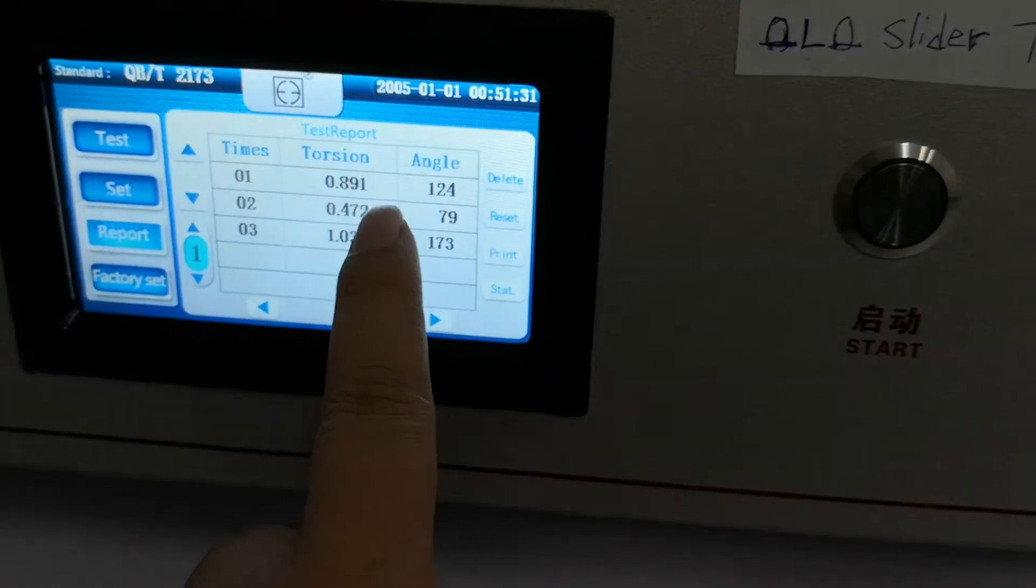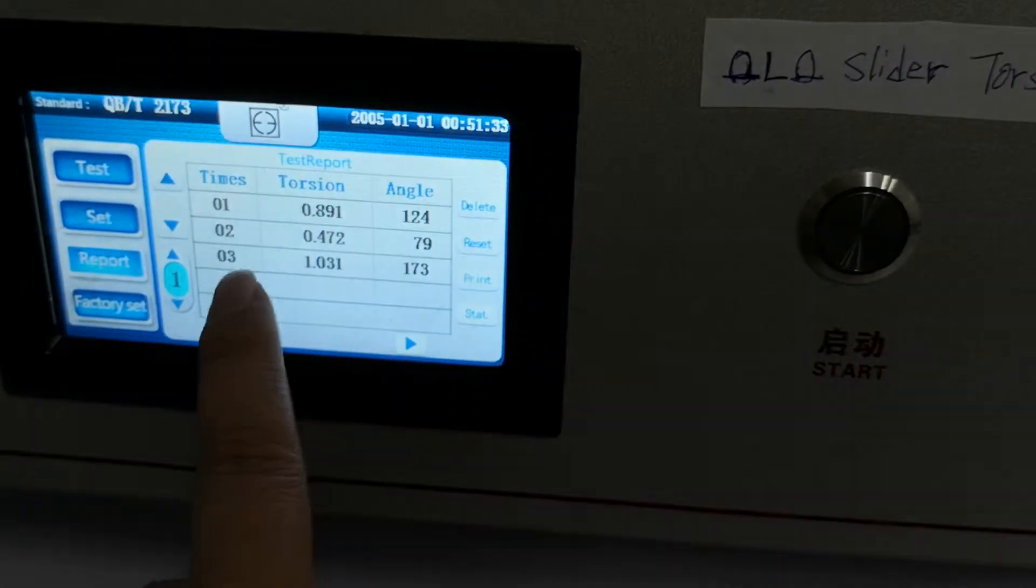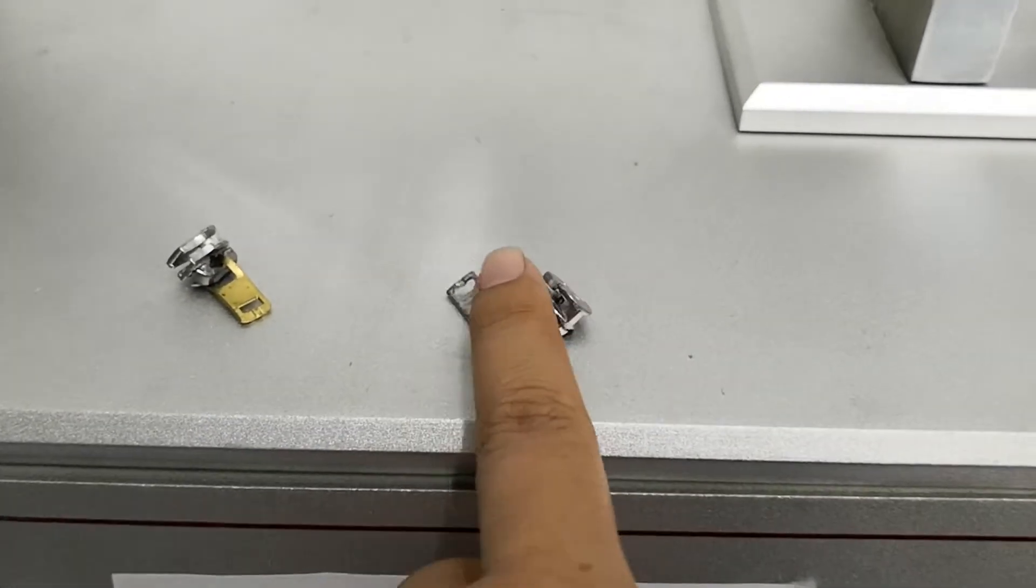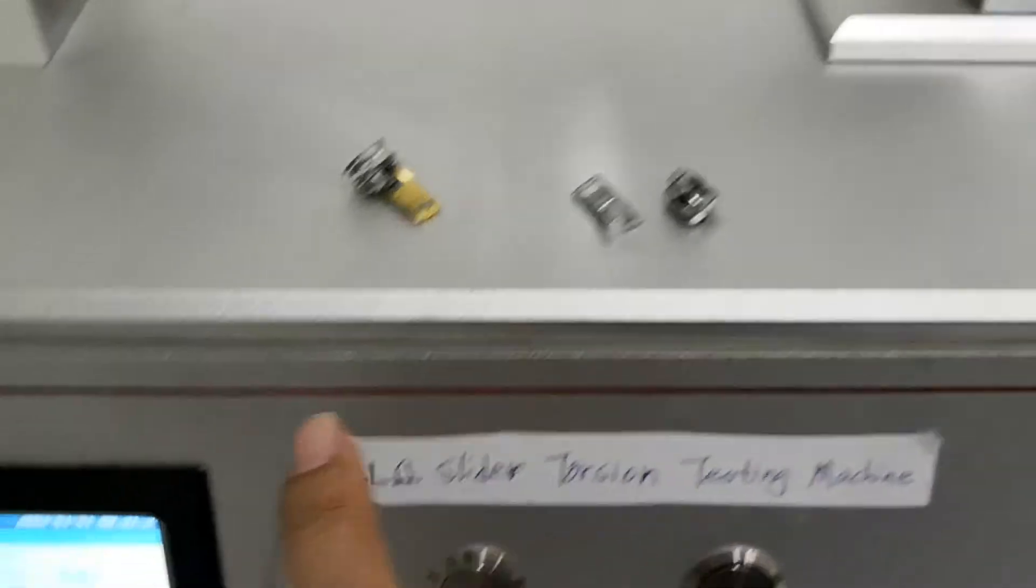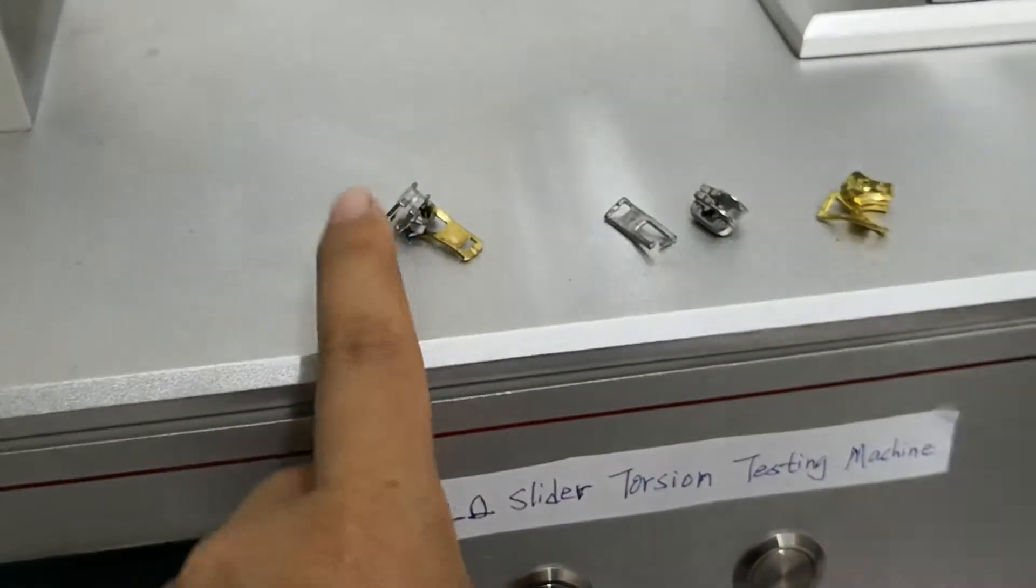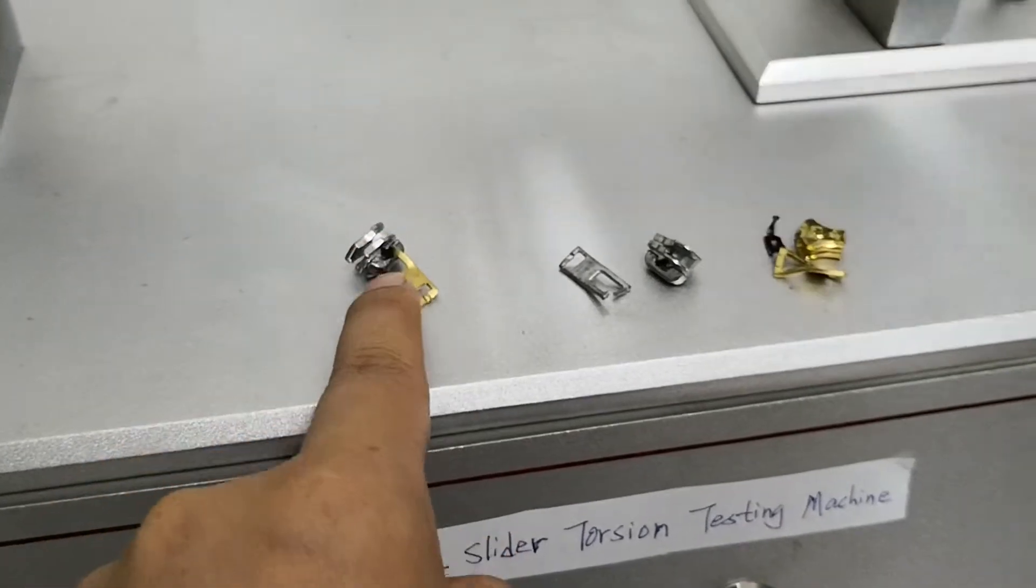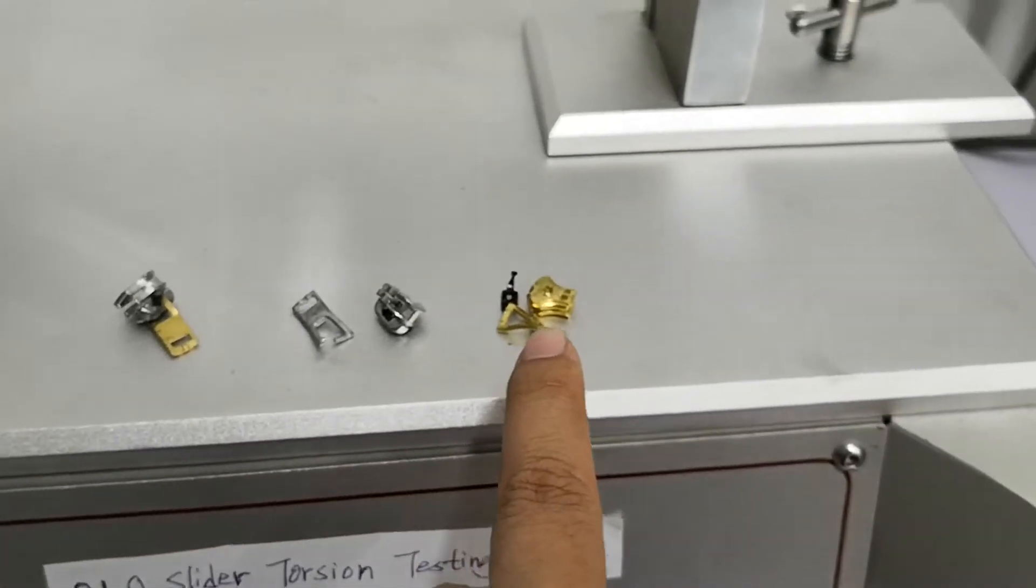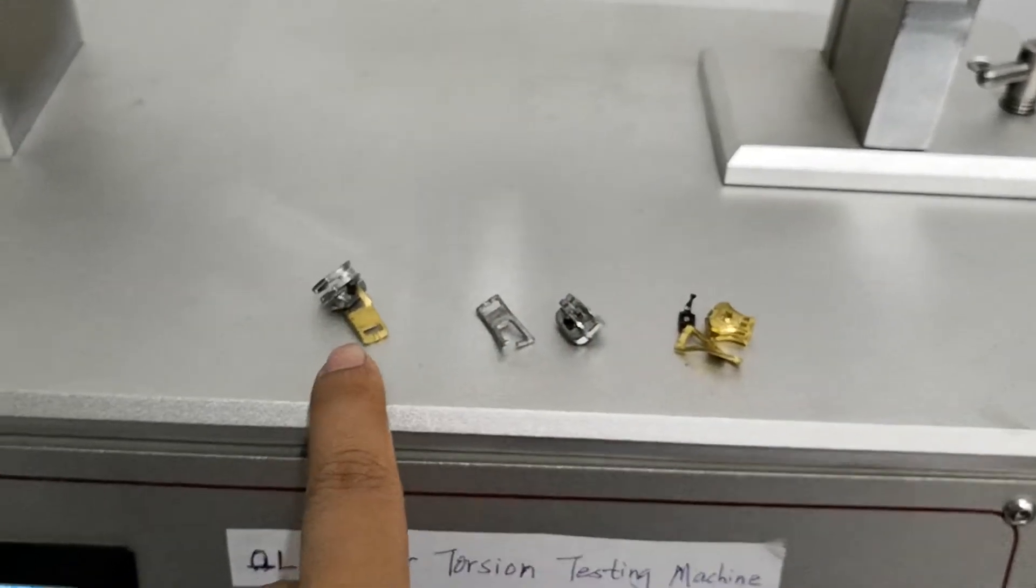First is for the blast white zinc slider. Second is for the zinc slider with the zinc puller. And the third one is for the zinc slider with the blast puller. So first and second and third.